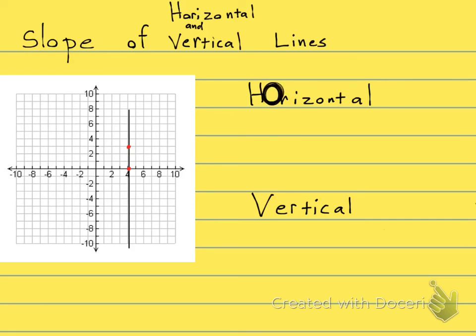Look at that. It's got a zero right there in the word. The slope of a horizontal line is zero. Okay, and then the slope of a vertical line is undefined.